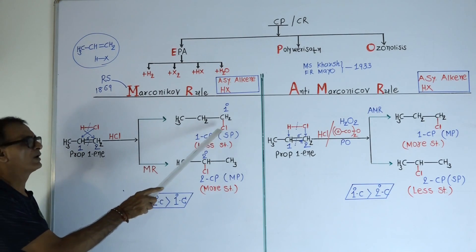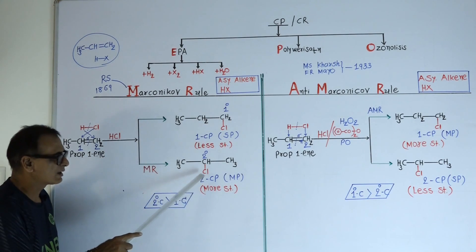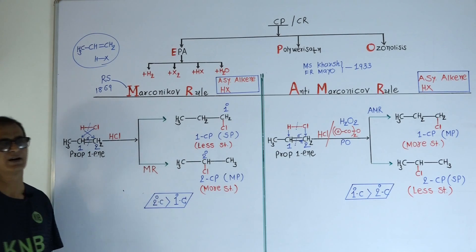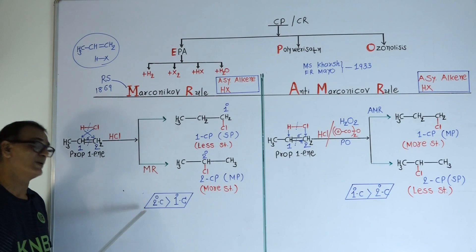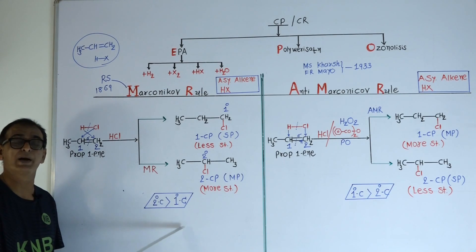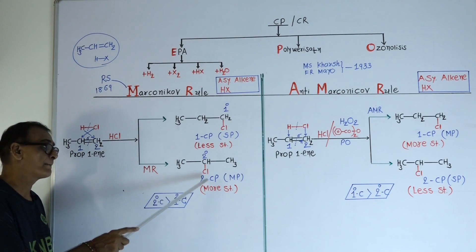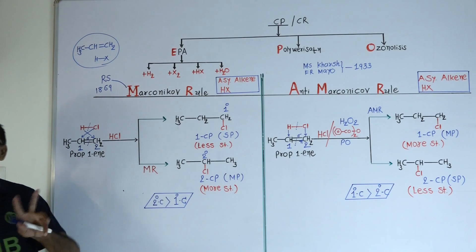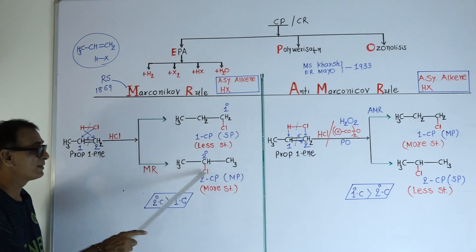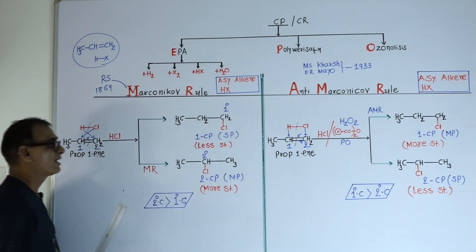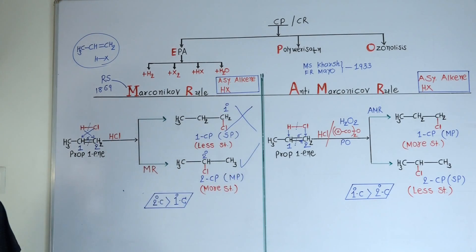In 1-chloropropane, chlorine is directly attached with a primary carbon. In 2-chloropropane, chlorine is attached with a secondary carbon. Secondary carbon is more stable compared to primary carbon. That is why secondary propyl chloride is more stable compared to primary propyl chloride. So the main product will be 2-chloropropane, and 1-chloropropane will be the minor product.